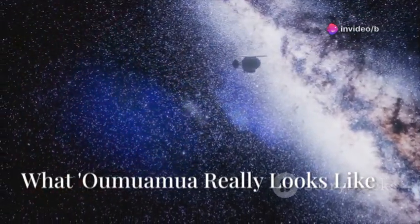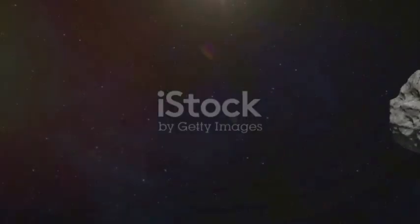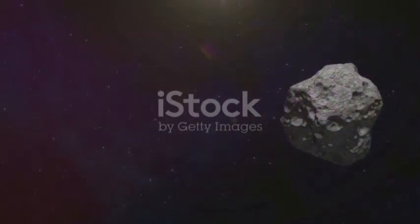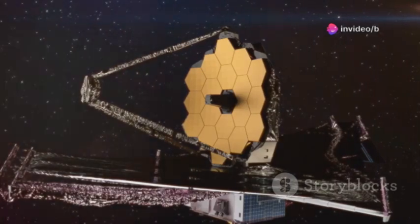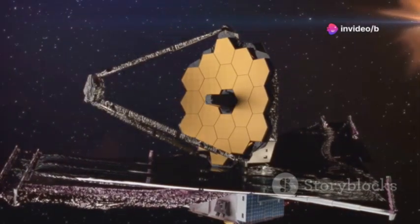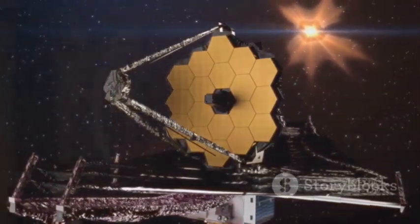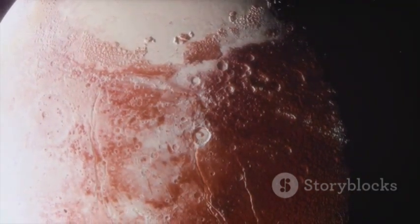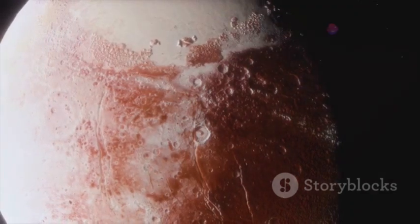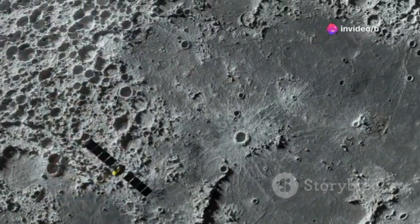The first real image of Oumuamua from Webb was breathtaking and surprising. It wasn't a cigar or a pancake, but a flattened, oblong object, like a squashed stone. About 400 meters long, 200 wide, and only 40 thick, its shape explained the odd brightness changes seen in 2017. The surface appeared dark and reddish, rich in carbon-based molecules, common in the outer solar system. Craters and scars showed a long, violent journey through space.